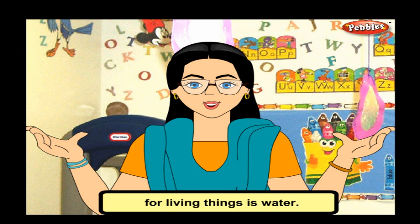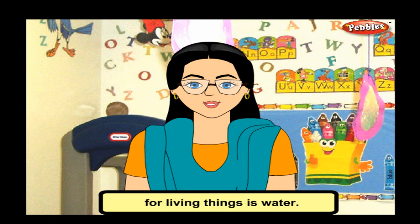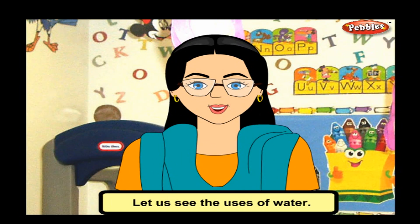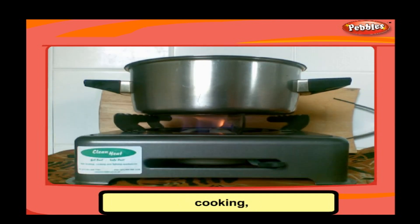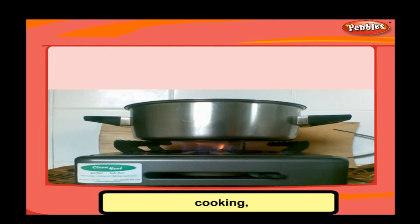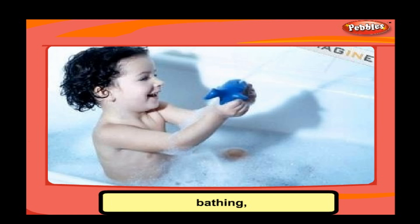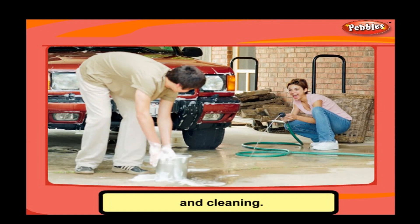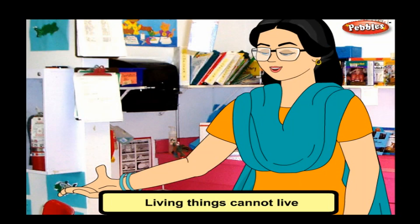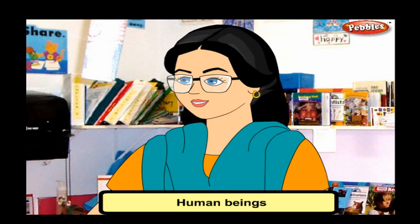The next basic need for living things is water. Let us see the uses of water. We need water for drinking, cooking, bathing, washing, and cleaning. Living things cannot live without water. Human beings, animals, and plants all need water.